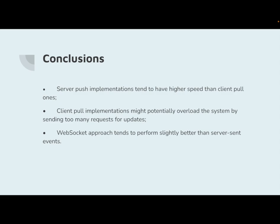In conclusion, this work provides an introduction to four different approaches to implementing instant messaging in web systems, describes what instant messaging is and its advantages over other forms of online communication. The key takeaways are: server-push implementations tend to have higher speeds than client-pull ones; client-pull implementations might potentially overload the system by sending too many requests for updates; and the WebSocket approach tends to perform slightly better than server-sent events, though the difference is not significant and additional investigation may be warranted. The results can be used when deciding which approach to use when developing a new instant messaging application, as well as for understanding existing implementations and their main differences. The research can be continued by specifying new key factors and conducting further comparisons.